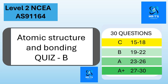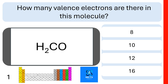Hi, it's Mr. T here. In this video I've got a quiz of 30 questions about atomic structure and bonding for beginning chemistry. This is aimed at level 2 NCA achievement standard 9-1-1-6-4, but anyone can use this for revision. What you're looking to do is get as many of these right as you can, and keep repeating until you're quite quick and proficient with your answers.